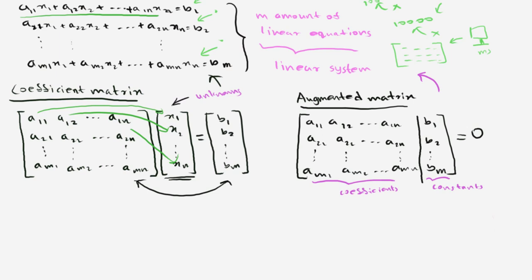Let's see how to solve a linear system by using a coefficient matrix. In the first video I forgot to mention that such a coefficient matrix can be represented like this. Such a matrix can represent the equation Ax = b, where b contains the given constant values, x is the vector of unknowns, and A is the matrix of coefficients.